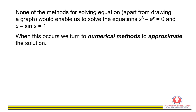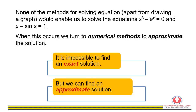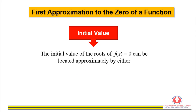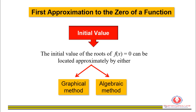It is impossible to find an exact solution, but we can find an approximate solution. The first approximation or initial value of the zero of an equation can be found approximately either by using the graphical or algebraic method.